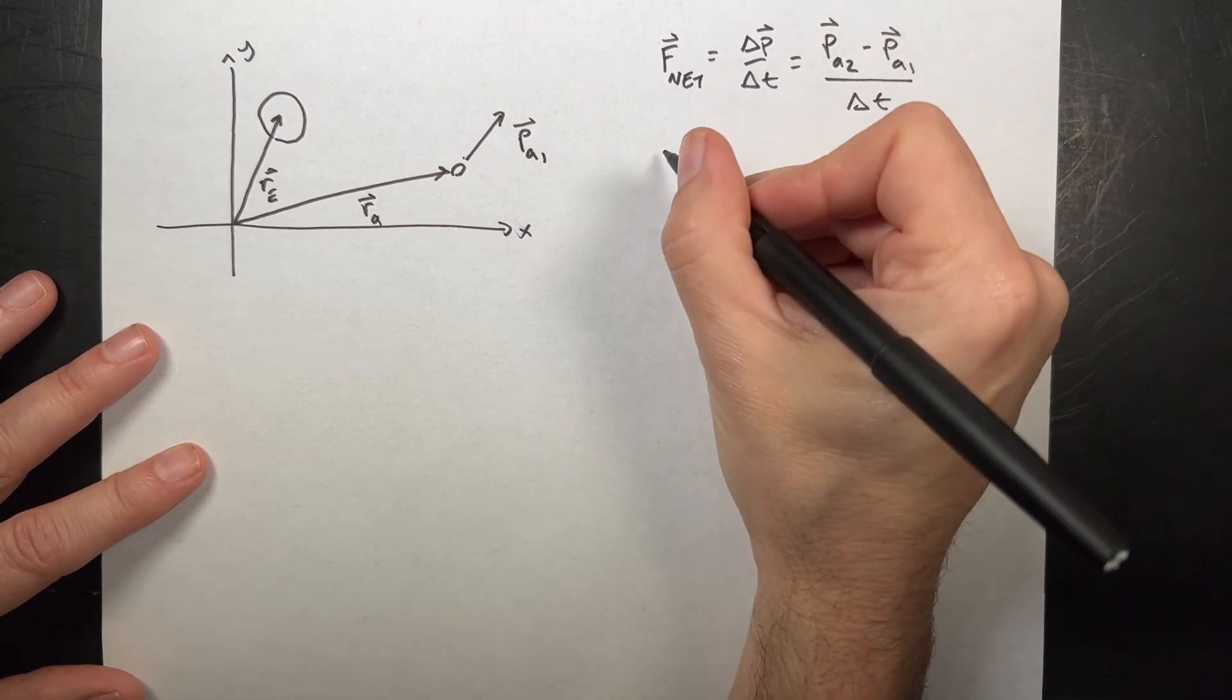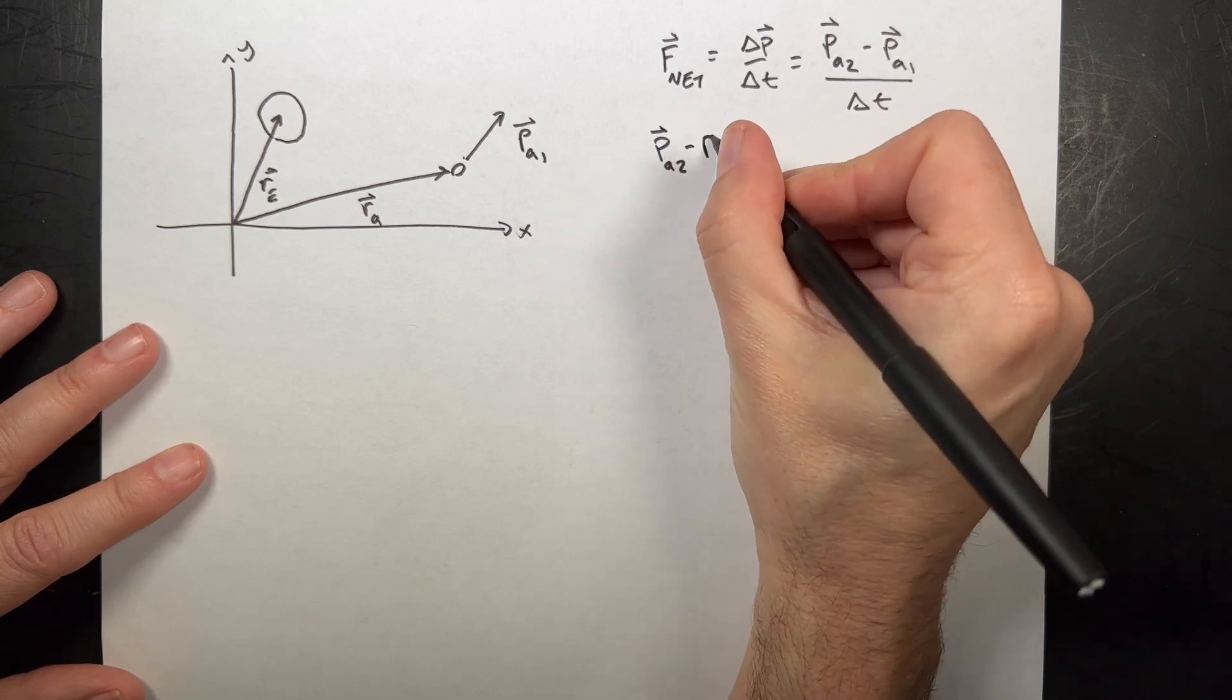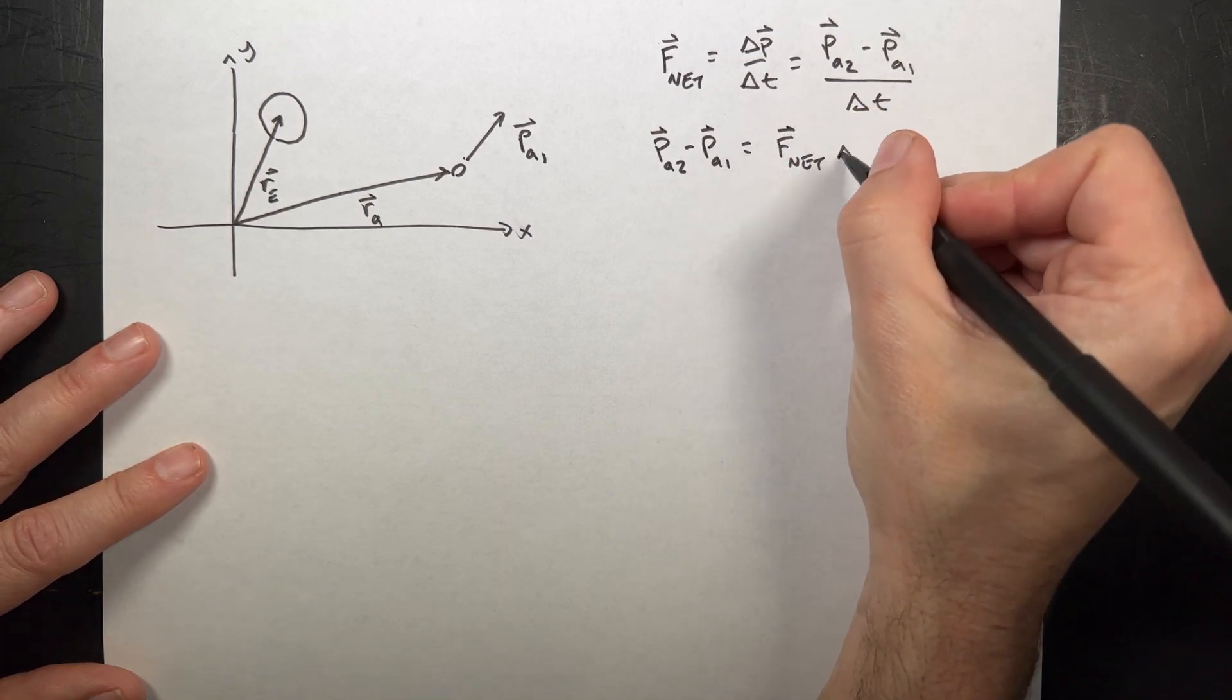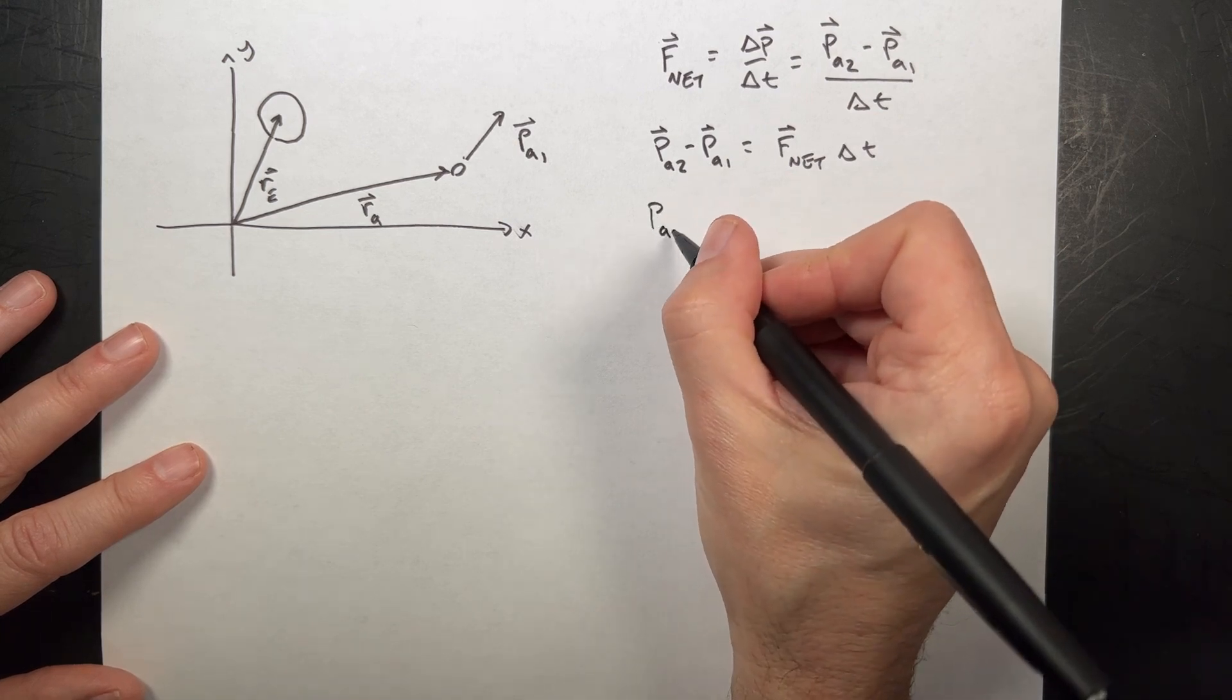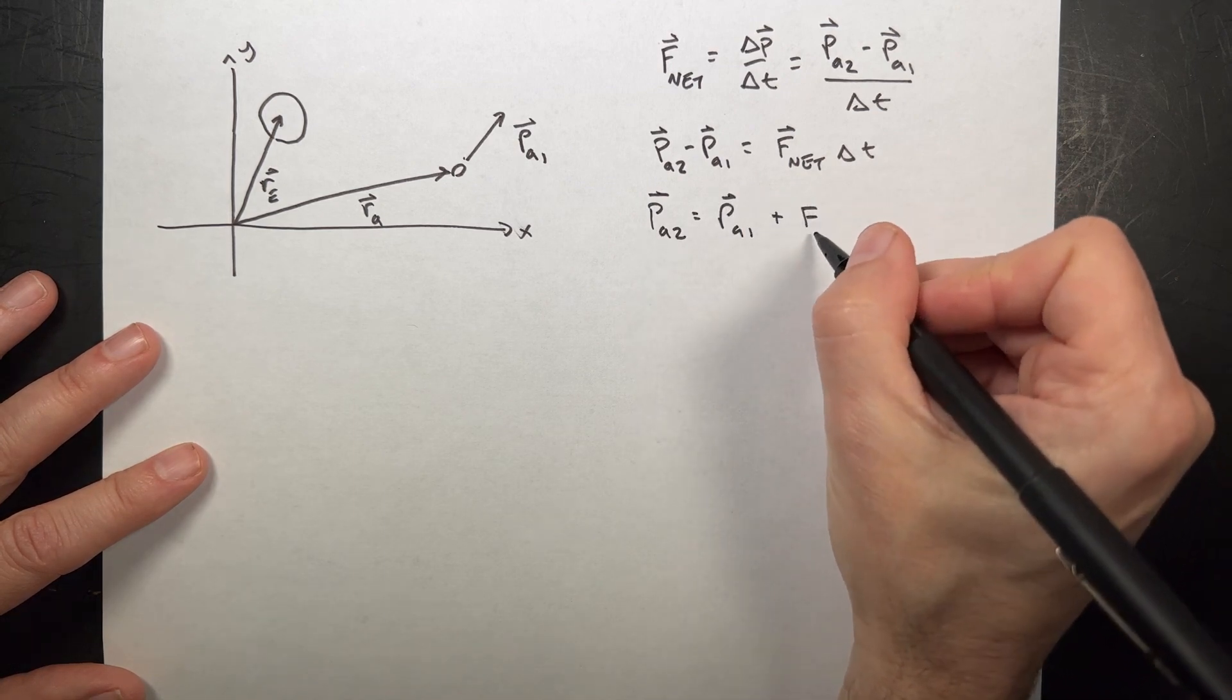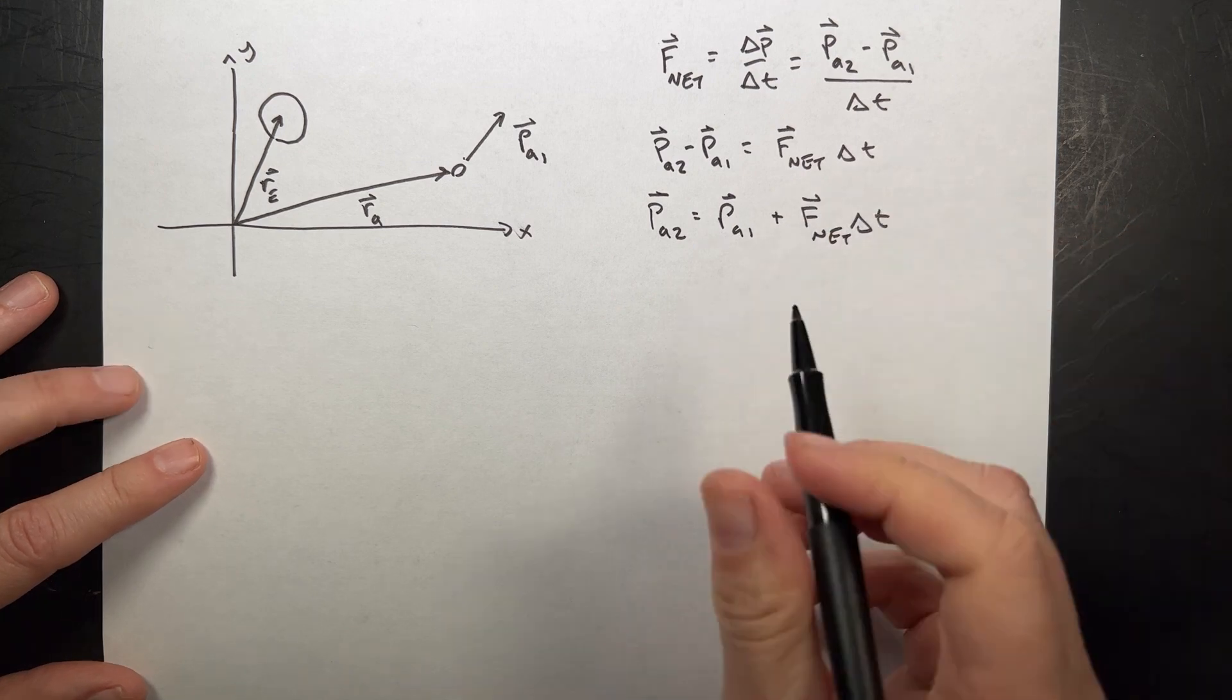Now if I multiply both sides by delta t, I get pa2 minus pa1 equals f net times delta t. Now I can add pa1 to both sides, and I get pa2 equals pa1 plus f net times delta t. And this is the net force on the asteroid.